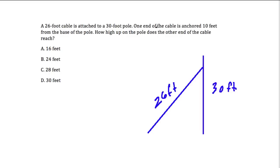Now one end of the cable is anchored 10 feet, this is 10 feet, here's the anchor, from the base of the pole. How high up on the pole does the other end of the cable reach? So we actually don't need this 30-foot right here. It's not really the side of our triangle. That's just the height of the pole. So what's missing now is this unknown, this leg.